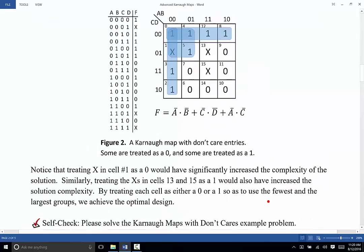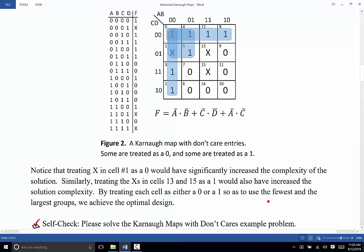So, that's really all that there is to Karnaugh maps with don't care entries. If you have a don't care entry in the truth table, transfer it to the Karnaugh map, and then you get to choose. It's a wild card. It can be treated as a zero or a one. And I think with that, you're ready to tackle the example problem, and then come back and we'll talk about mid-term expressions.